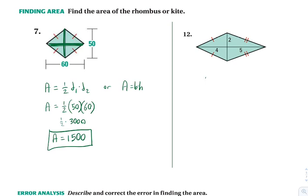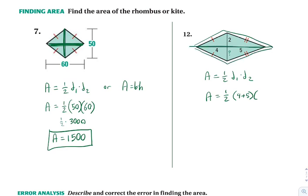For the kite: area equals one half diagonal 1 times diagonal 2. One diagonal is four plus five long. For the other diagonal, we know by SSS symmetry that the bottom matches the top, so the missing segment is also two — giving a full diagonal of two plus two, or four. So we get one half of 9 times 4, which is one half of 36, equaling 18.